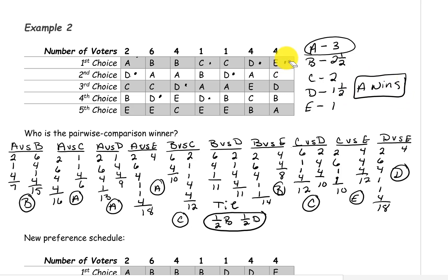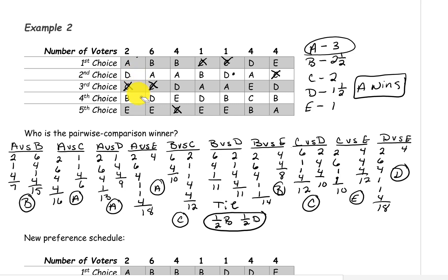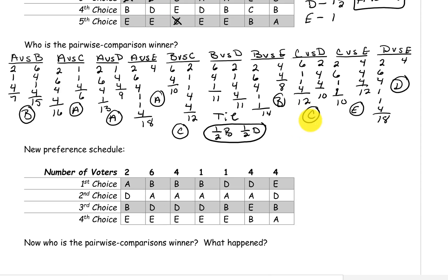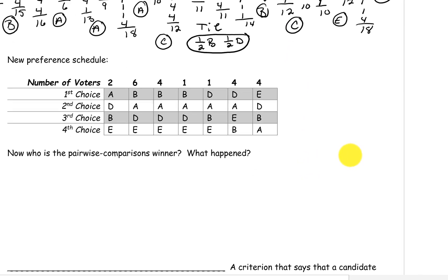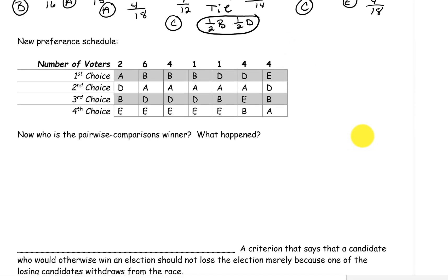Now we'll take a look at what happens if candidate C were to drop out of the election. Candidate C will just come off of all of these ballots. We will only have four choices instead of five. So on these two ballots it would be A first, D second, B third, and E fourth. These six would be B first, A second, D third, and E fourth, and so on. Here is that preference schedule without C on it, and let's see who wins this time.